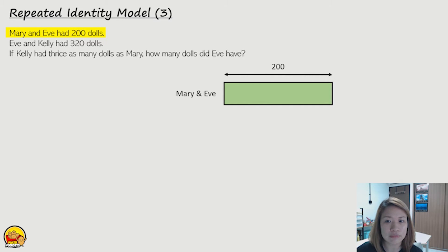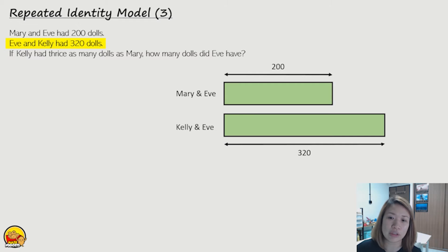Next information. We know that Eve and Kelly, they had 320 dolls. Okay, so let's indicate that in the model. So I draw a longer bar, right? For 320.